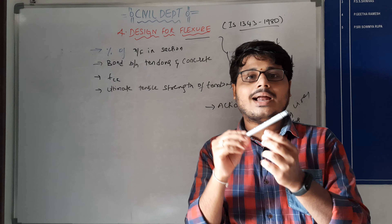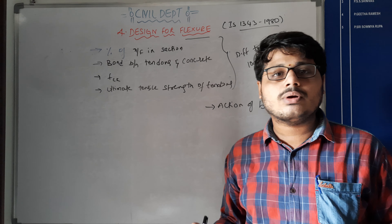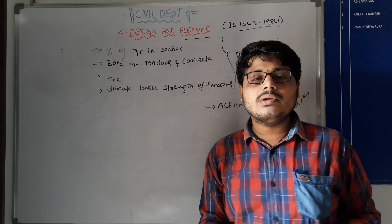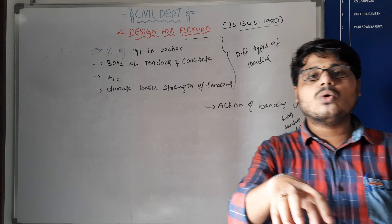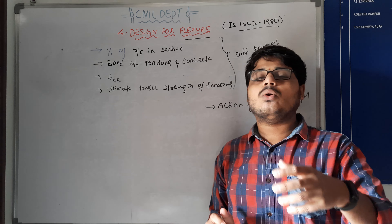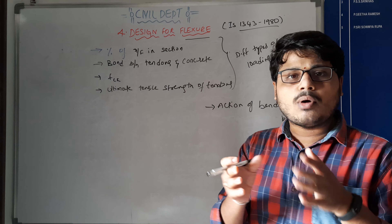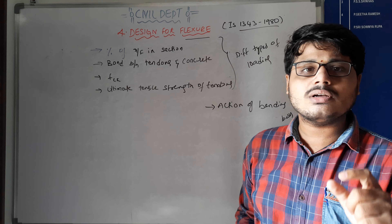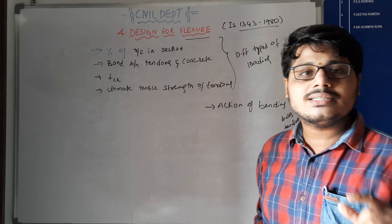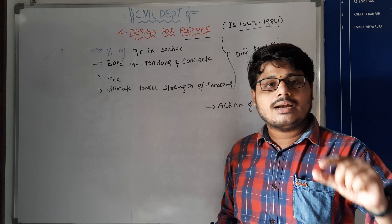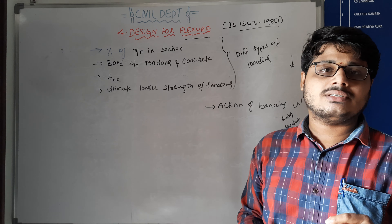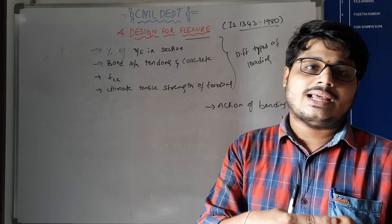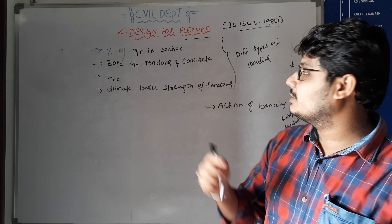Next, the bond between tendons and concrete. The bond is between the outer part of concrete and the inside tendons. If different loads are acted, the bond between tendons and concrete should be maintained. Because concrete is weak in tension and steel or tendons are weak in compression, both bonding should be equal at the neutral axis.